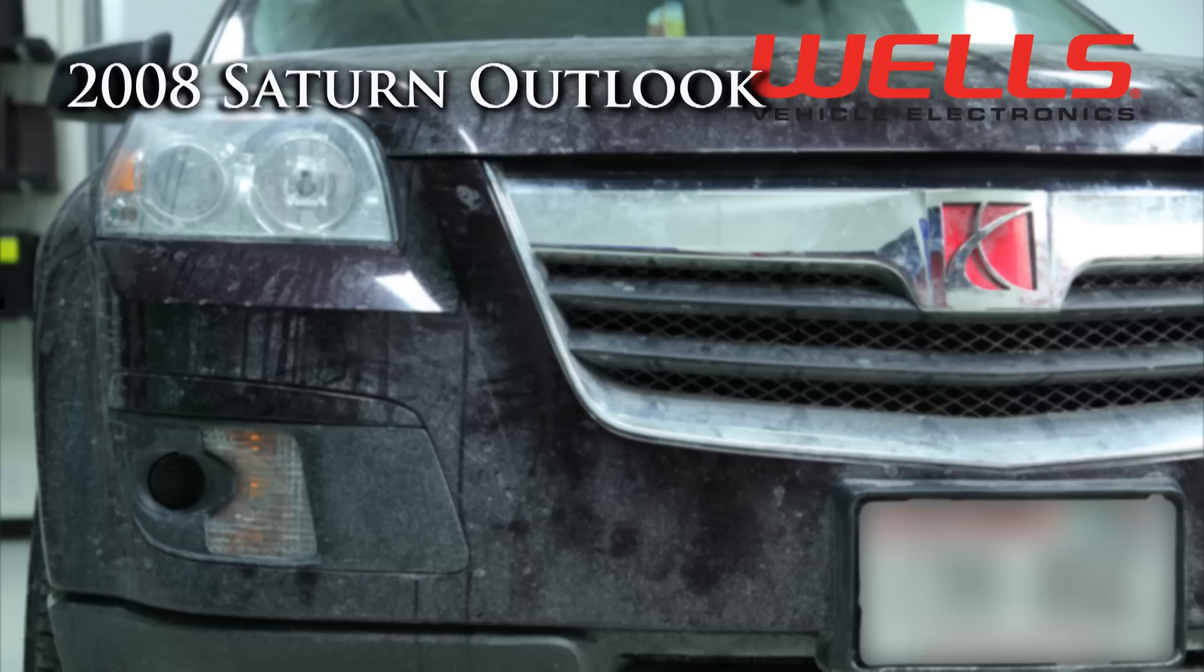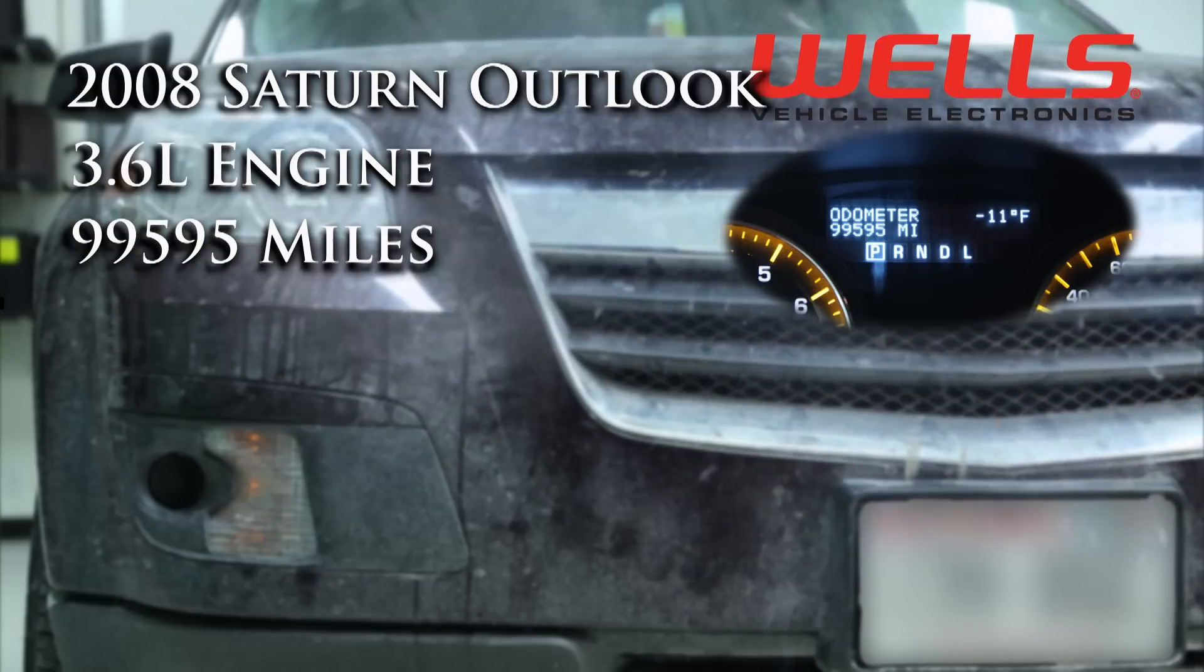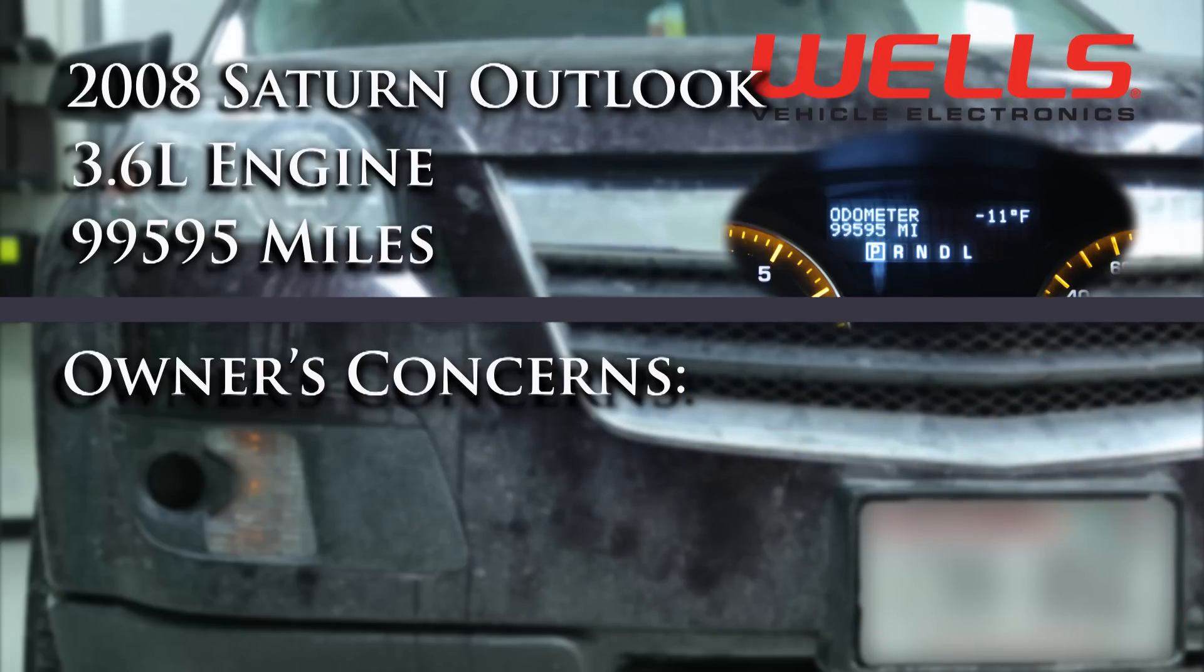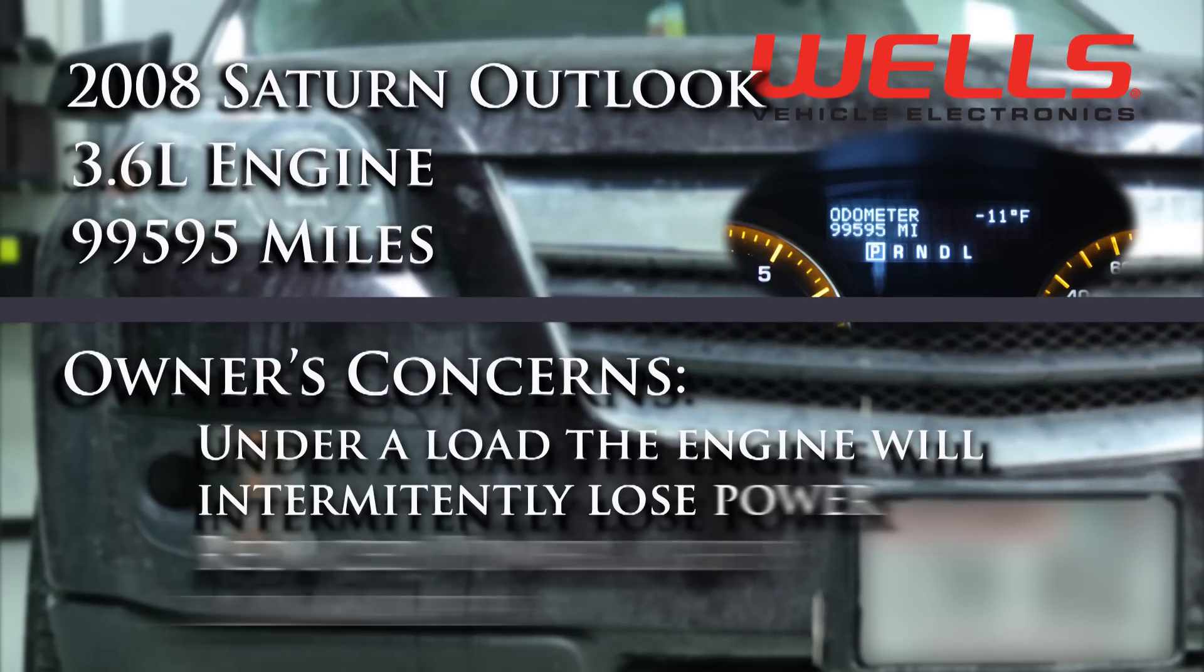Intermittently while driving under a load the engine will lose power and the reduced power light will illuminate. She would then pull off the side of the road, shut the engine off, wait 10 or 15 minutes, restart and everything is normal for a while.